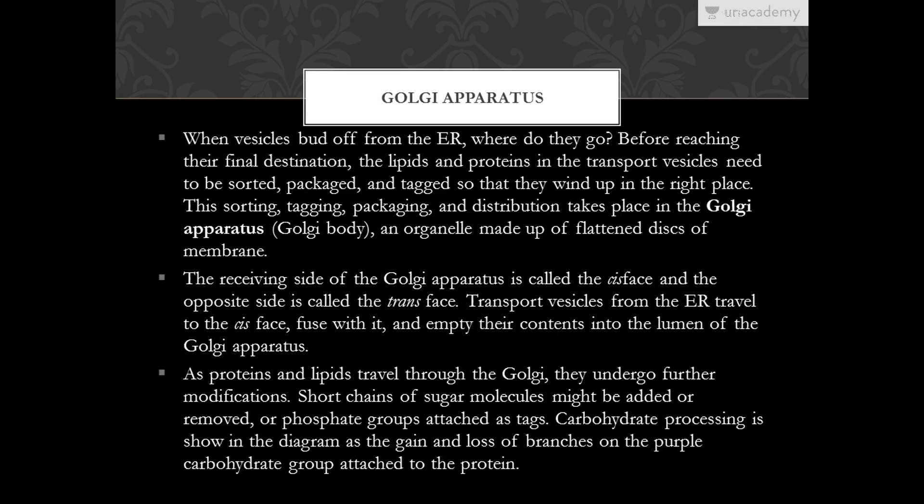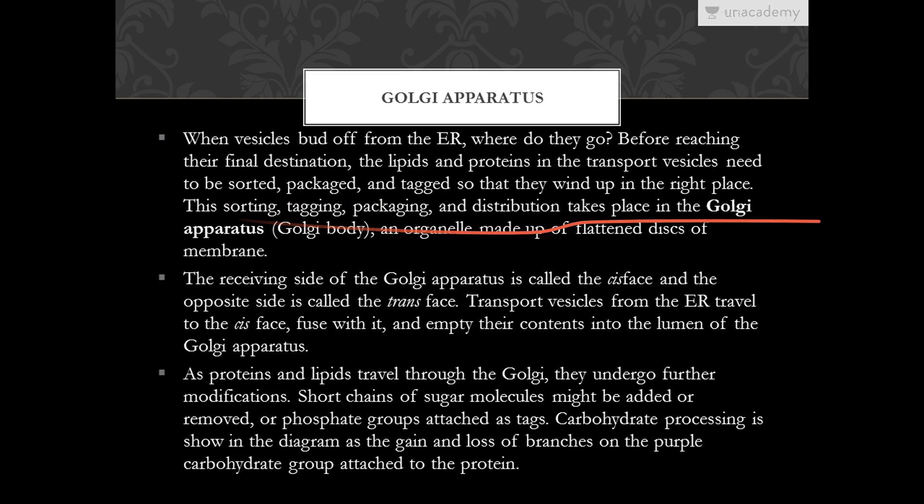Now let's talk about the Golgi apparatus. When vesicles bud off from the ER, before reaching their final destination the lipids and proteins need to be sorted, packaged and tagged so that they wind up in the right place. This sorting, tagging, packaging and distribution takes place in the Golgi apparatus, an organelle made up of flattened discs of membrane.